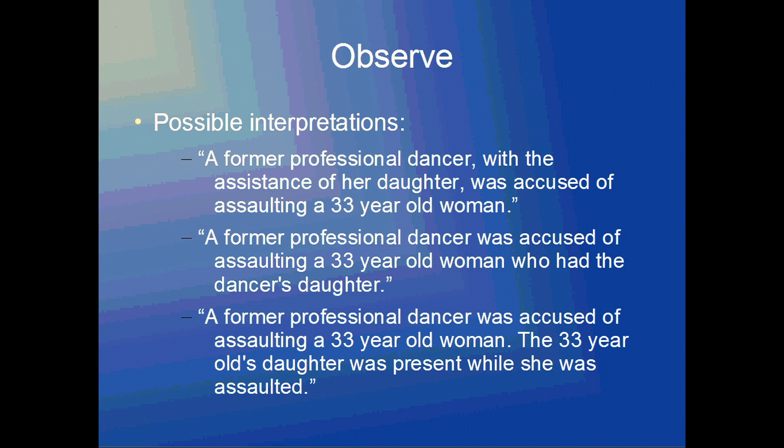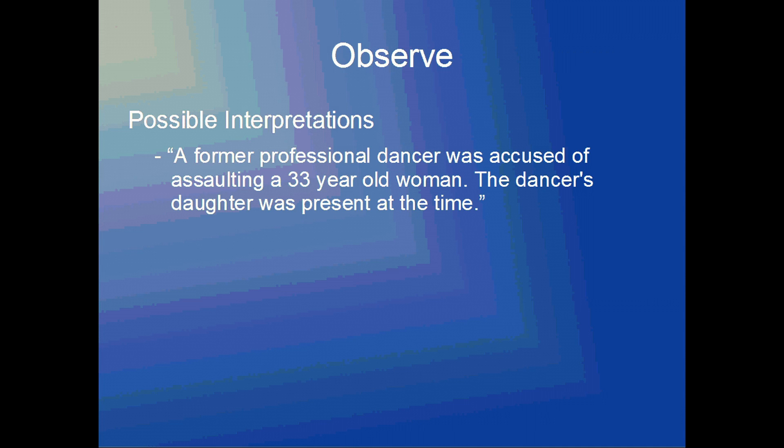My last interpretation has the same first sentence: a former professional dancer was accused of assaulting a 33-year-old woman. The second sentence is different: the dancer's daughter was present at the time. Again, it's not lexically ambiguous because it's stated explicitly that the daughter belongs to the dancer. And it's not semantically ambiguous because instead of saying 'with,' it's simply stated that the daughter is present with the dancer.